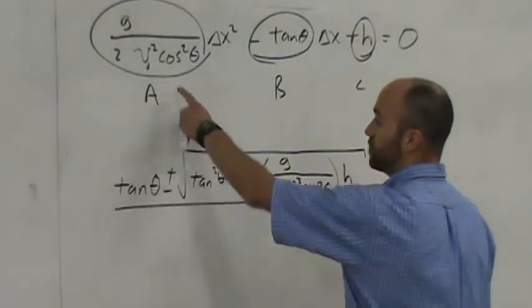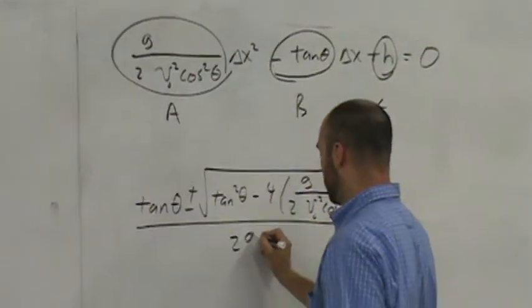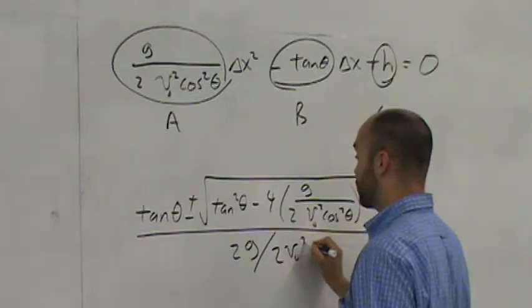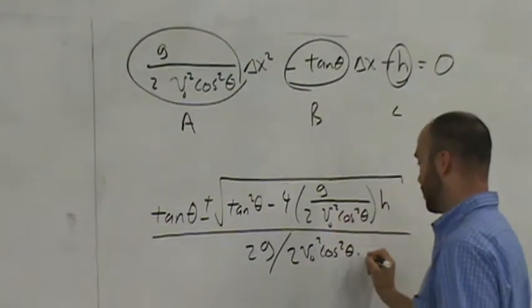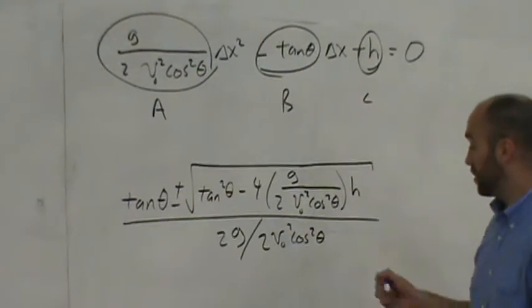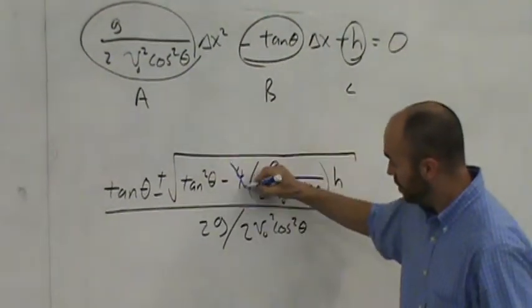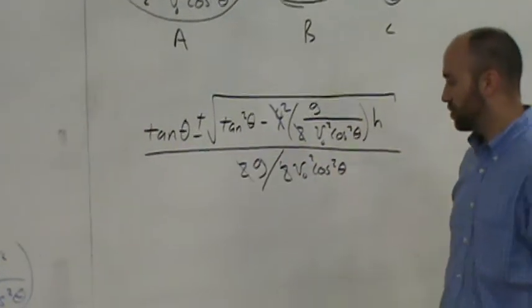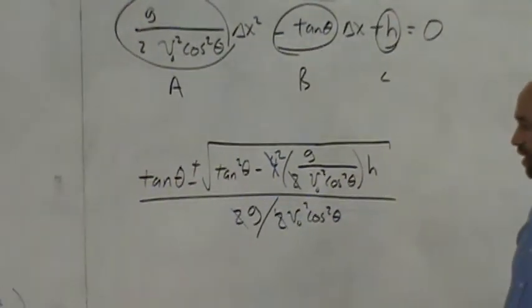This is all divided by 2 times a, so this is 2g divided by 2, v naught squared, cos squared theta. And you see there's a little bit of things we can cancel out here. This 4 and this 2, leaving the 2 upstairs, this 2 and this 2 go away. That's about it.